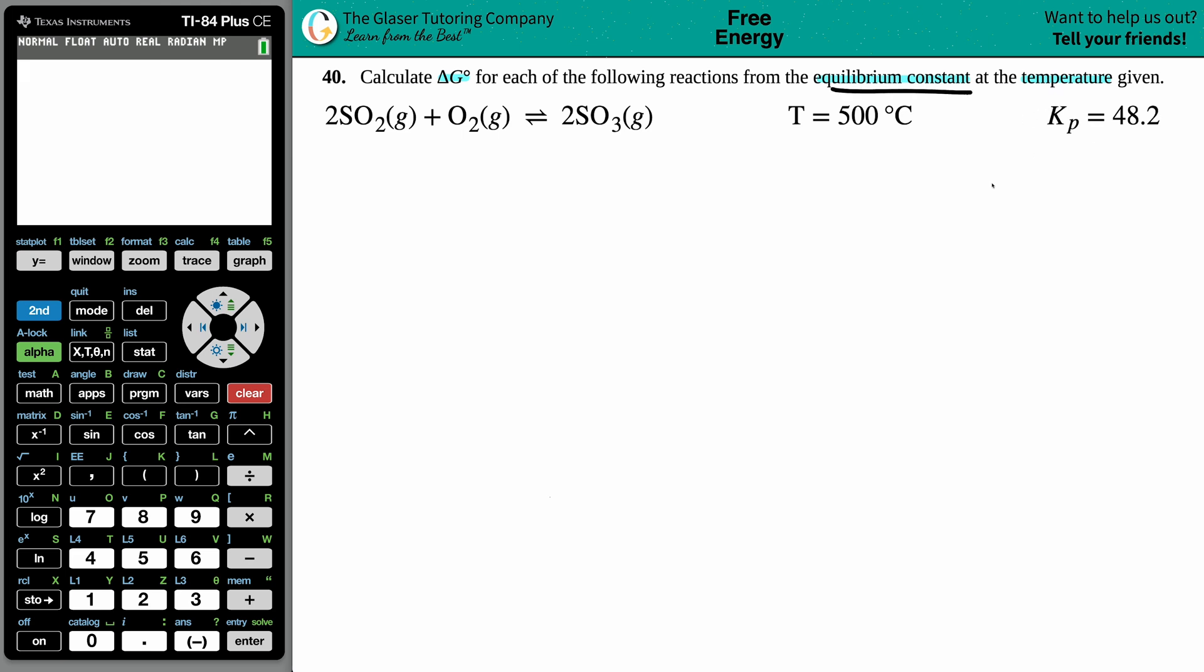They gave me that equilibrium constant, the K value, and we're looking for ΔG. If they give you K values and you're searching for the Gibbs free energy, there's basically only one formula you can use. Two variations depending on which variable you're solving for, but in this case we're solving for ΔG.